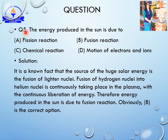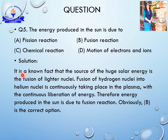This is a very important question about electrons and ions related to nuclear energy. In the case of fusion, two lighter nuclei fuse together to form a heavier nucleus. One deuterium atom of hydrogen reacts with one tritium atom to give helium under certain conditions. The source of huge solar energy is fusion of lighter nuclei; hydrogen nuclei fuse into helium nuclei in plasma with continuous liberation of energy. Hence the answer is fusion.